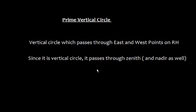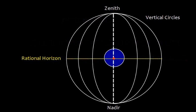Now let's define one of the important vertical circles used in the rational horizon diagram. The vertical circle which passes through the east and west points on the rational horizon is called the prime vertical circle. Since this is a vertical circle, it obviously has to pass through zenith and nadir as well. In the diagram: this is zenith, this is nadir, this is rational horizon, and these are the vertical circles.